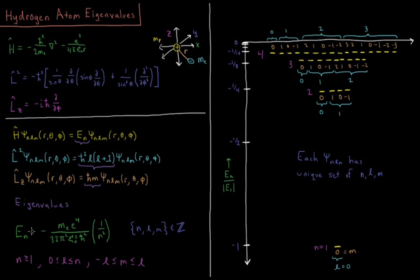Our energy, as we saw in previous videos, was equal to negative mass of the electron times charge of the electron to the fourth over 32 pi squared epsilon naught permittivity of free space squared h-bar Planck's constant over 2 pi quantity squared times 1 over the quantum number n squared.